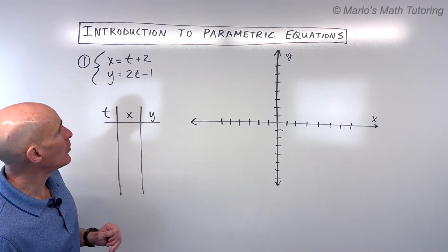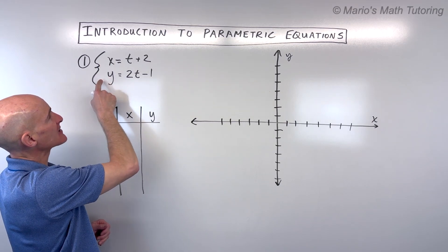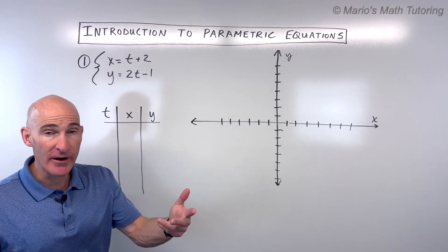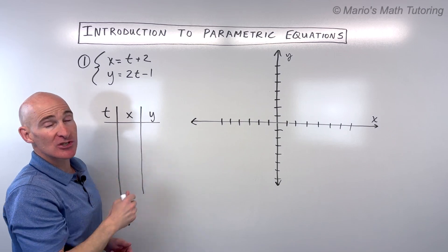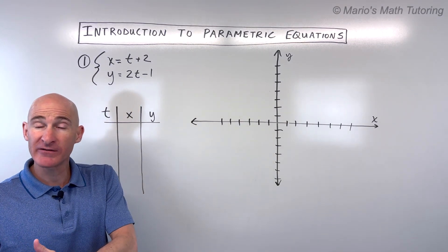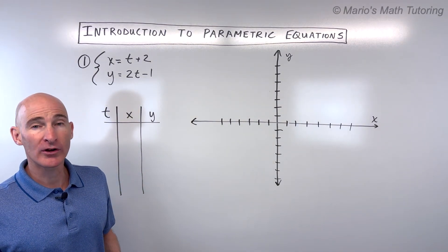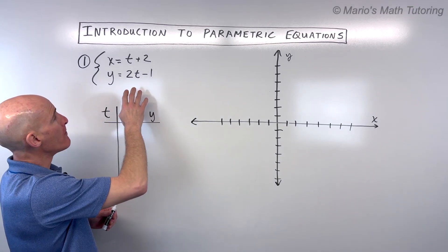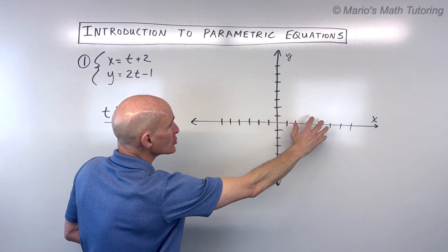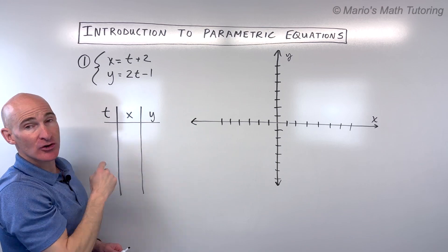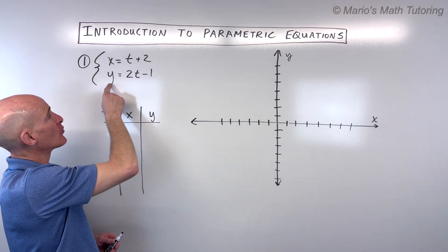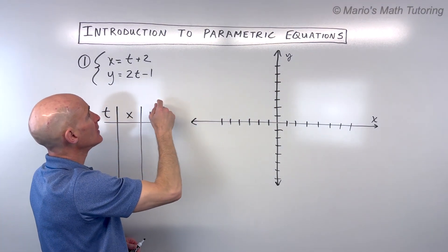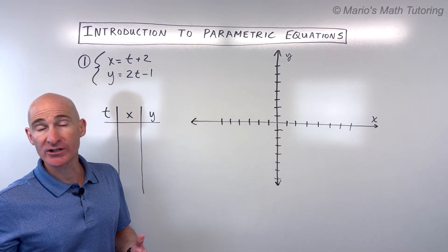The first example, we've got these two equations, x and y, and notice that they're in terms of a third variable, in this case t, which is called the parameter. You might think of t as like time, or it could represent something else. Basically what happens is we're modeling this horizontal motion, or this x direction, in terms of t or time, and then we're modeling this vertical motion in terms of t or time.